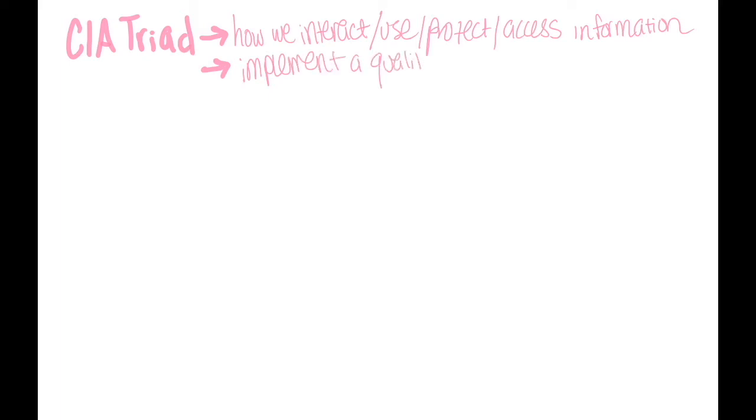From this breakdown, it's clear that the CIA triad is all about how we interact, use, protect, and access information. Therefore, understanding what it is can help implement a quality security policy, while understanding the various principles behind it.